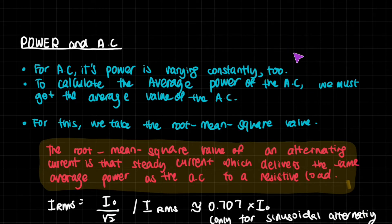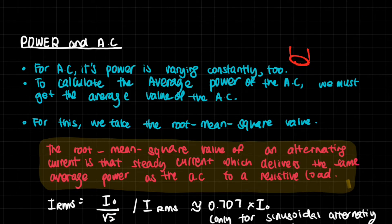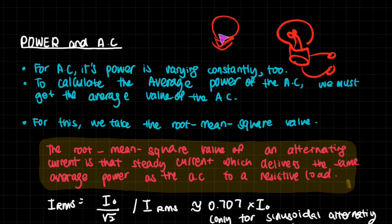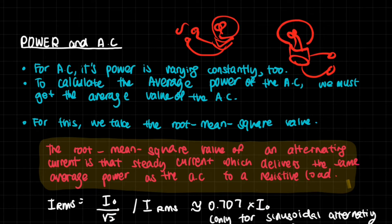A good way to picture this: take two identical lamps — one connected to a DC power supply and one to an AC power supply. When both lamps shine with equal brightness, the DC current value equals the RMS of the AC. That direct current value is the root mean square of the alternating current — an average constant value that provides exactly the same power on average as the AC.